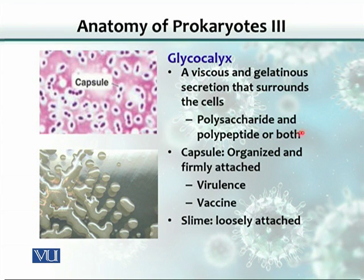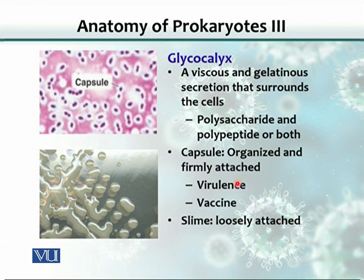This variation can be used for identification of bacteria. The glycocalyx is called a capsule when it is organized and firmly attached to the cell. It has a role in virulence — the ability of the organism to cause damage when it infects the body. The capsule can also be used for identification of the bacterium.